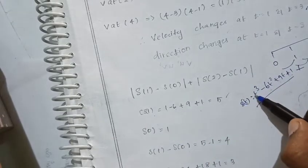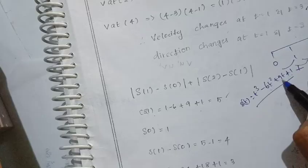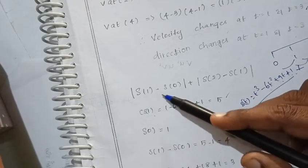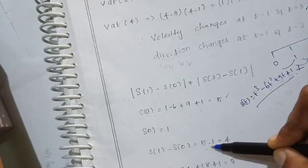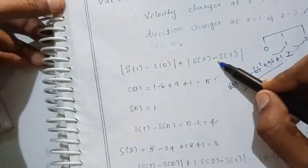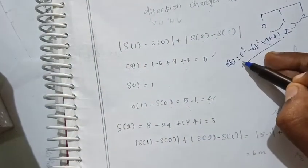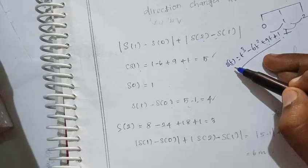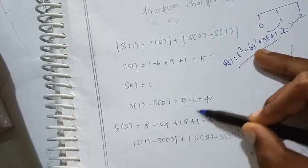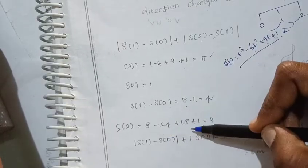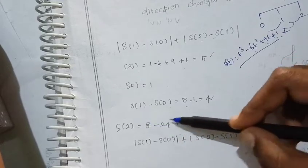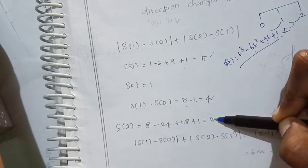For S(2): substituting t = 2 gives 2³ - 6(2²) + 9(2) + 1 = 8 - 24 + 18 + 1 = 3. So S(2) = 3.